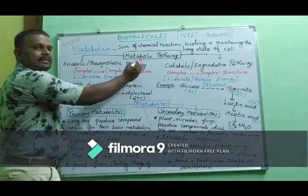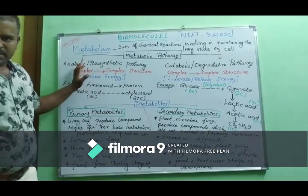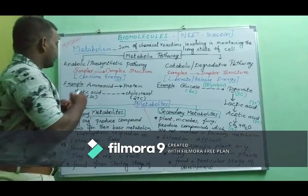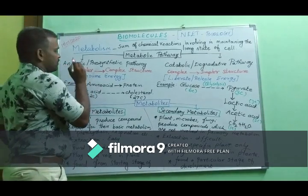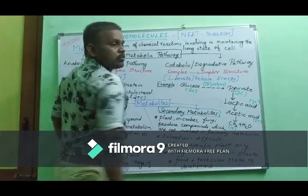In the metabolic pathway, we have two types of metabolic pathways. The first one is anabolism, and the second one is catabolism.